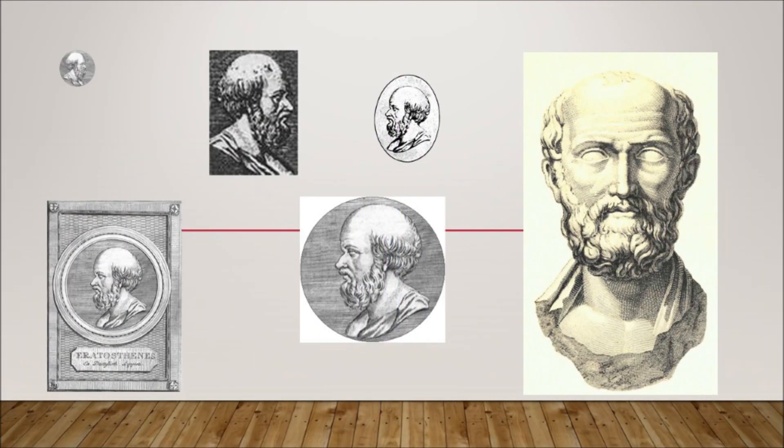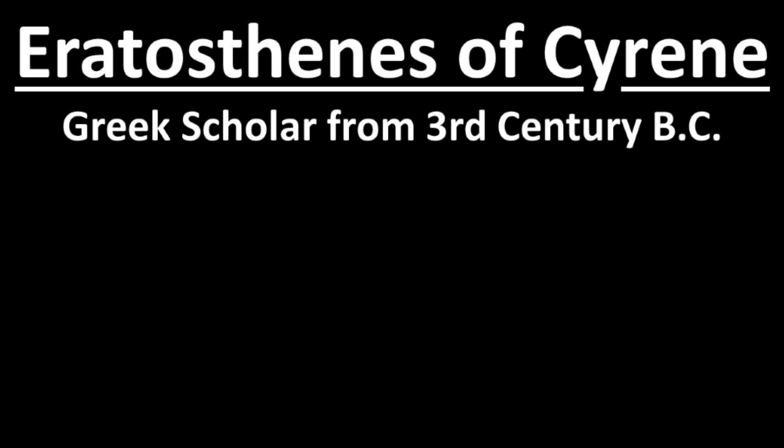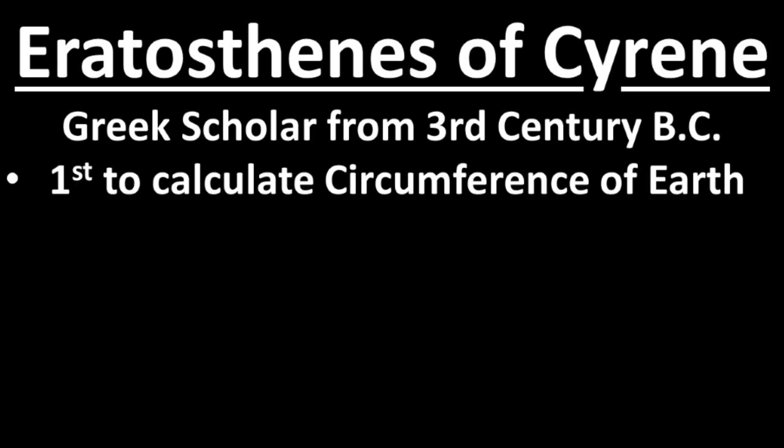Displayed on our wall of great mathematicians is Eratosthenes. Eratosthenes of Cyrene was a Greek scholar from 3rd century BC. He was the first person to calculate the circumference of the earth.